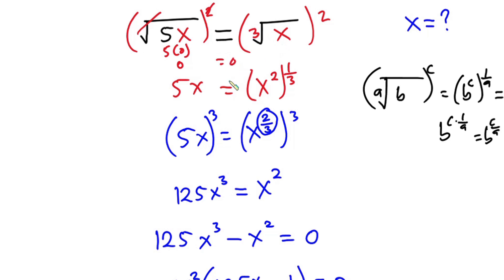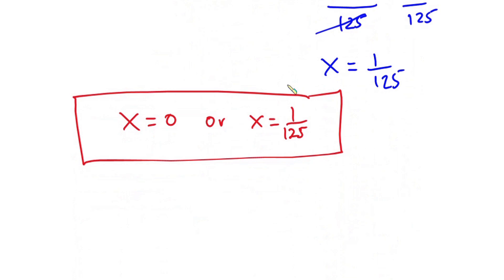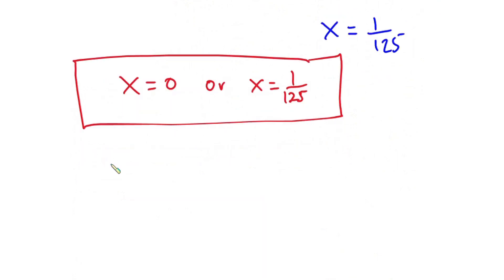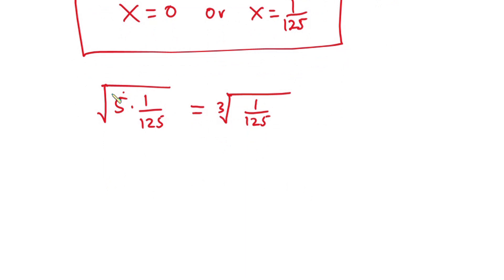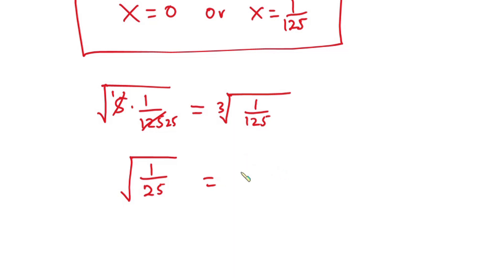Now let's plug in x equals 1 over 125. We have the square root of 5 times 1 over 125, which equals the cube root of 1 over 125. Since 5 divided by 5 is 1 and 125 divided by 5 is 25, we get the square root of 1 over 25, which equals 1 over 5.